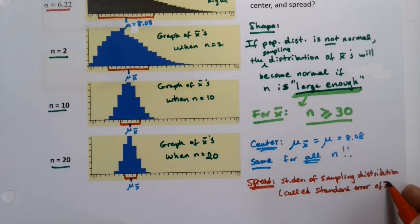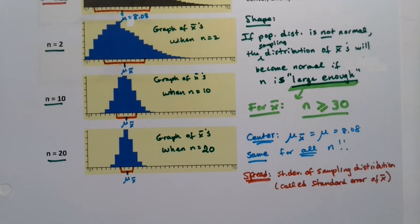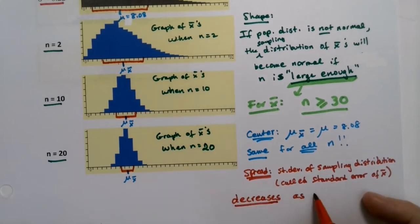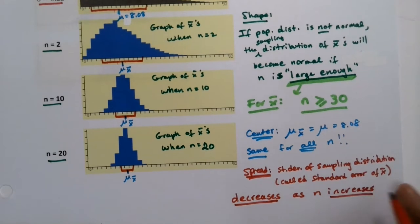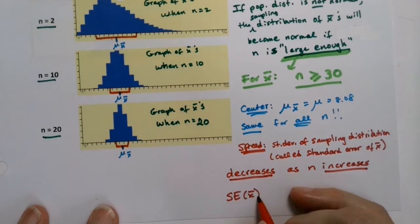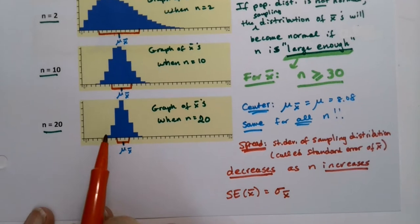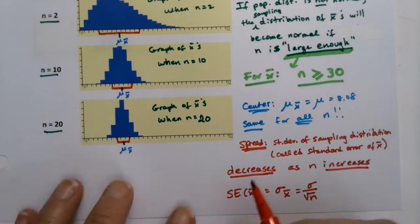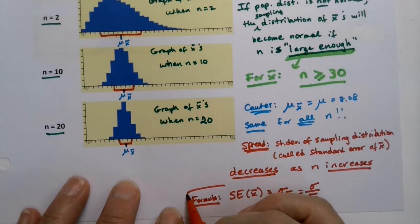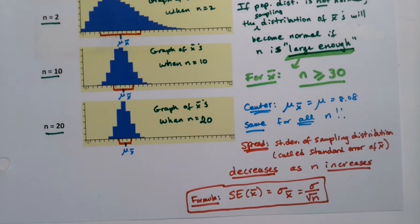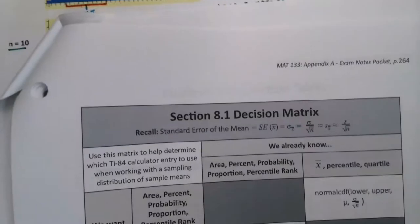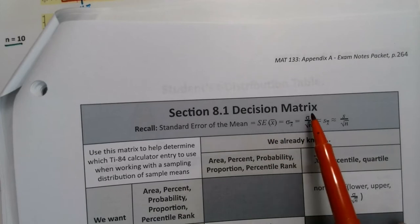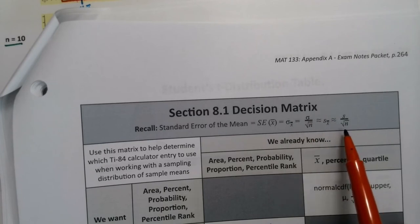The standard error of X-bar — written sigma sub X-bar — shrinks and decreases as n increases. The formula is: sigma sub X-bar equals sigma over the square root of n. This is already written on your note sheet in the section 8.1 decision matrix: standard error of X-bar equals sigma divided by the square root of n. If we don't have sigma, we approximate it with s over the square root of n.